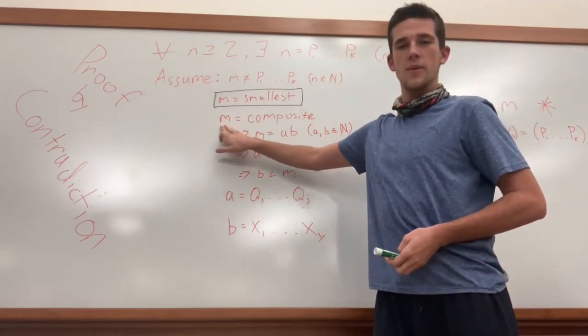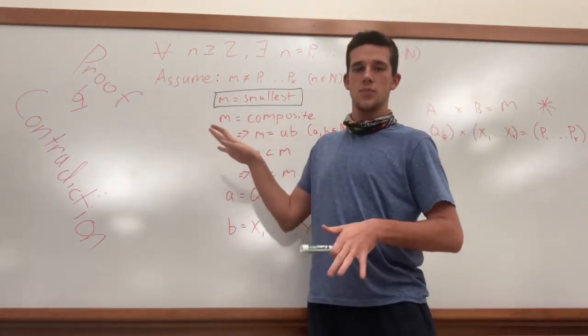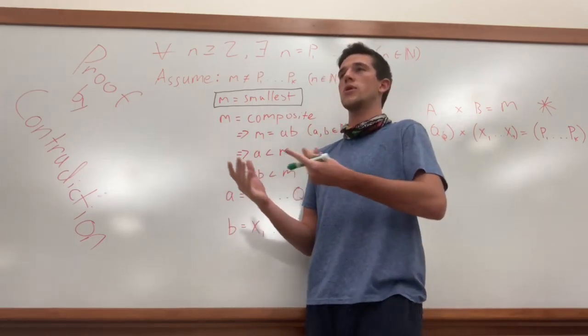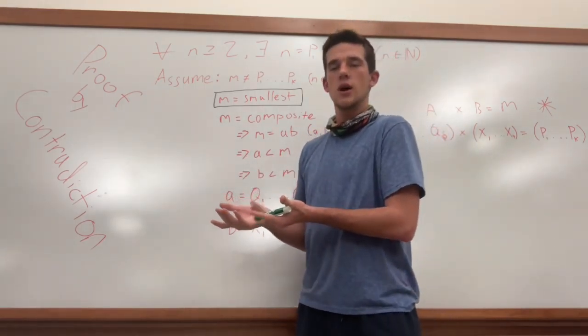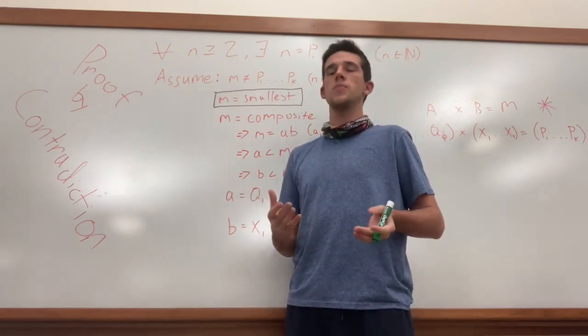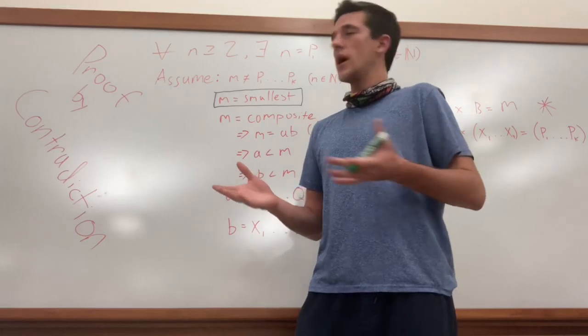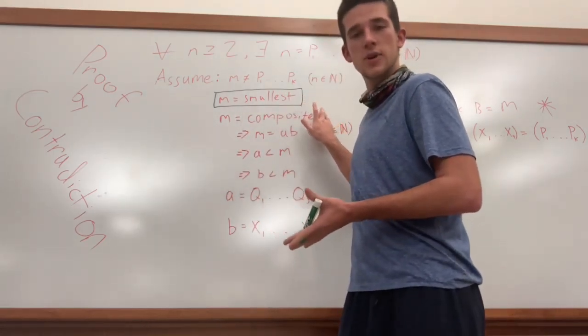Something that we know from m is that we know m is a composite number. If m was not a composite number, that would mean that it's a prime number. If it was a prime number, well, then it would be easy to prove this proof because it would simply be m to the first power, and that is its product of prime numbers. So m cannot be a prime number, so it has to be composite.